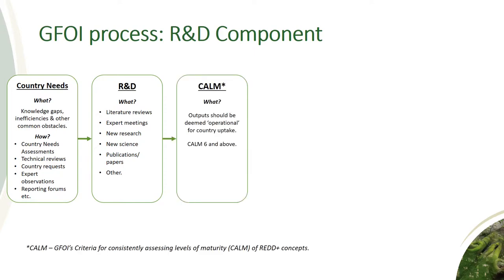Step three is about assessing operational readiness. GFY wants to make sure that resources we take to countries are operational. The framework we have developed to assess the maturity of new research and products is the CALM framework — Criteria for Consistently Assessing Levels of Maturity for REDD Plus concepts. This is essentially a self-assessment tool that we ask researchers and developers to submit their products to. It provides a pathway for progressing product development, and if a product is deemed operationally ready — level six or above in CALM — it can go to the next step: a proposal to the MDD advisory group for development of a new MDD module to be hosted on the REDD Compass platform.